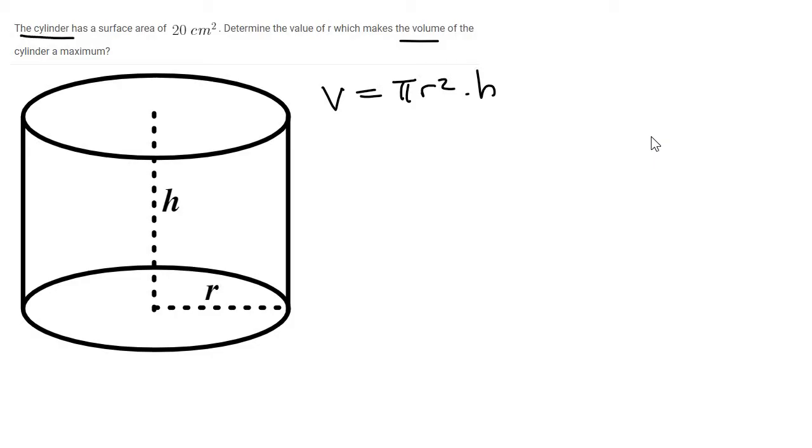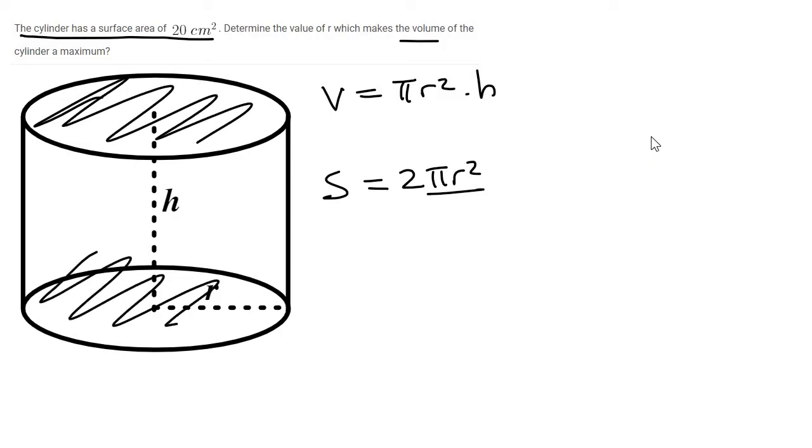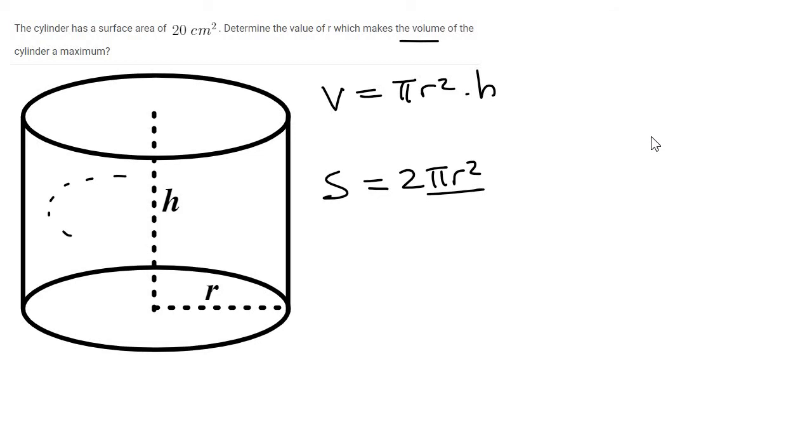So they tell us here as well that the cylinder has a surface area of 20. Now the surface area of a cylinder is 2πr² because there's two circles at the top and at the bottom, and each circle is πr², and then the circumference of a circle is 2πr, but then you times that with height to make sure that you get all the stuff on the outside like that.